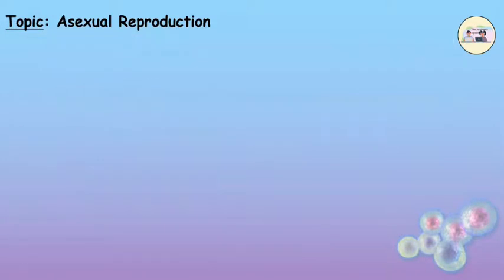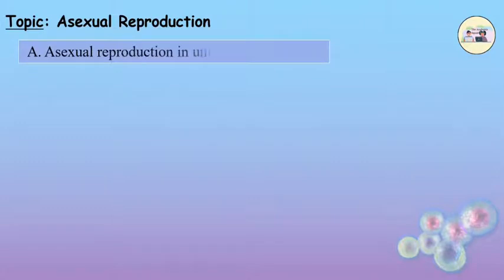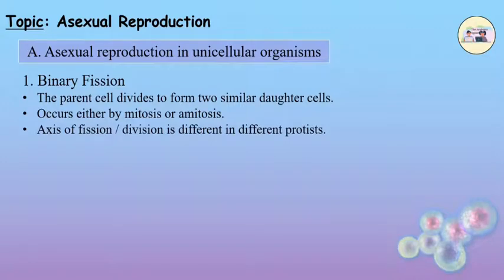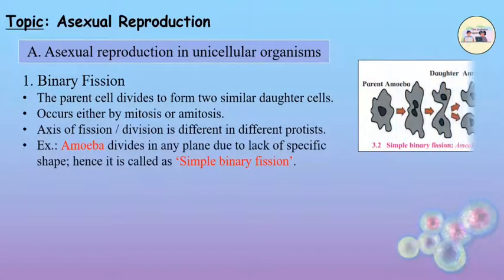Asexual Reproduction in Unicellular Organisms. 1. Binary Fission. In this process, the parent cell divides to form two similar daughter cells. Binary fission occurs either by mitosis or amitosis. The axis of fission or division is different in different protists. For example, amoeba divides in any plane due to lack of specific shape, hence it is called simple binary fission.